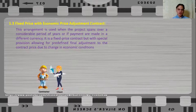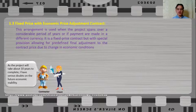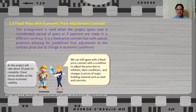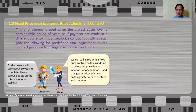For example, the contractor says that as the project will take about 10 years to complete, there is serious doubt about future economic stability. So the client proposes: we can still agree on a fixed price contract with a condition to adjust the price due to inflation, labor conditions, and changes in prices of major building materials such as steel and concrete. The adjustment items are predefined in the contract.